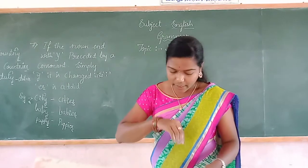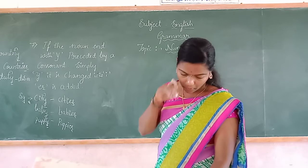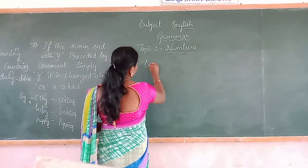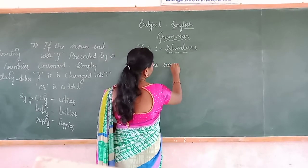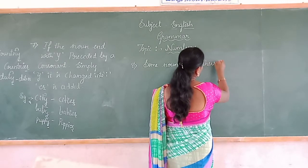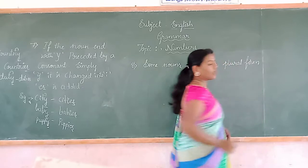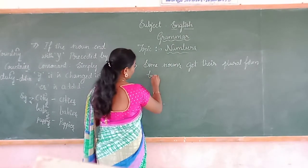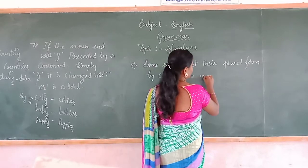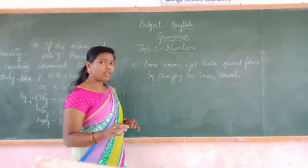Rule number 8: some nouns get their plural form by changing the inner vowel.